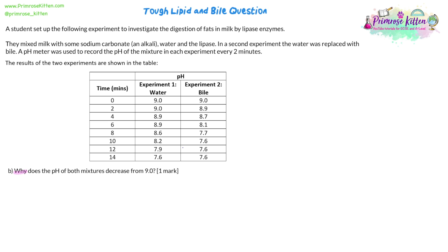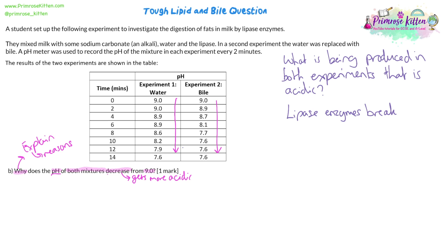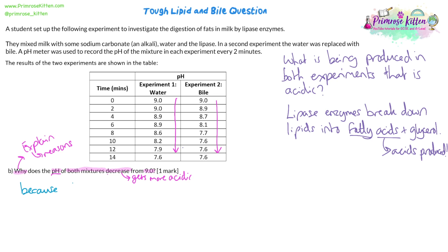Now we've got the results table showing the results of both experiments, and it's asking: why does the pH of both mixtures decrease from nine? So why does it get more acidic? What is happening in both experiments to make the pH more acidic over time? It's because the lipase enzymes are breaking down or digesting the lipids into fatty acids and glycerol. Fatty acids are acids — there's a clue in the name. So the answer is simply: because fatty acids are being produced. You need to say 'fatty acids' specifically, not just 'acids', to show understanding.